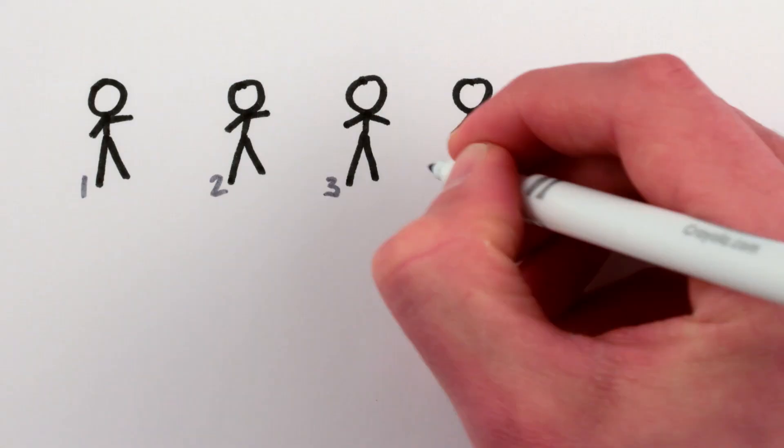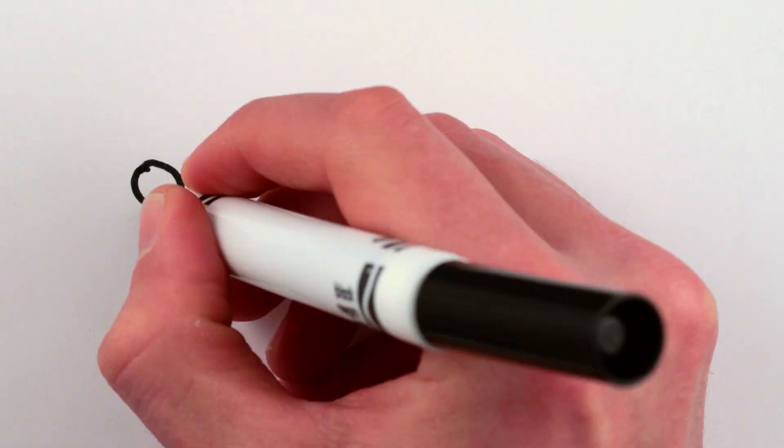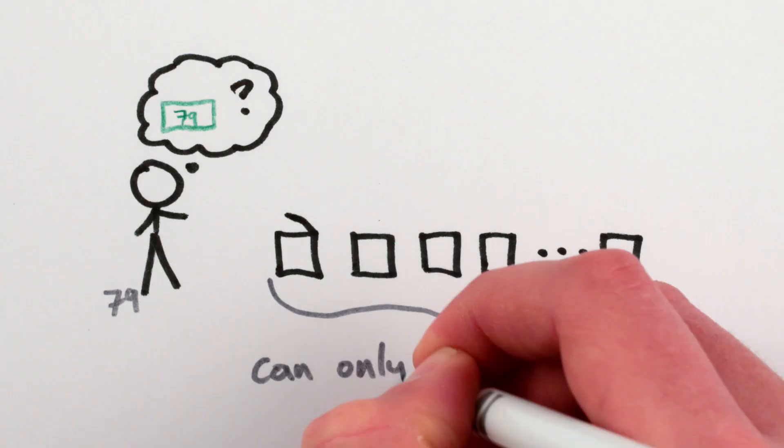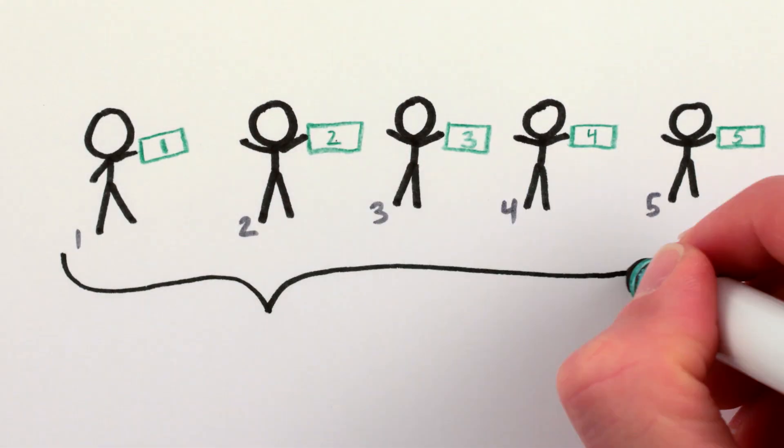Okay, so you remember the setup. 100 people have had marked dollar bills put randomly into 100 boxes, and every person, one at a time, gets to look in 50 of the boxes, and you all collectively win only if every single person finds their own bill.